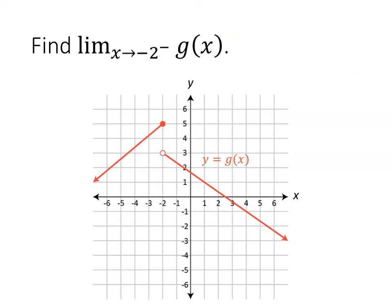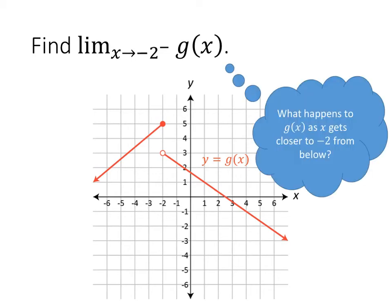Now we're asked for the limit as x goes to negative 2 from below of g. Notice the little minus sign after the negative 2, which means we're looking at x-values that are less than negative 2. So the question is: what happens to g as x gets closer to negative 2, but this time from below? We're thinking about x-values getting closer to negative 2 from the left — sometimes stated as the limit as x goes to negative 2 from the left of g.